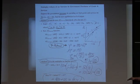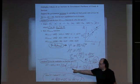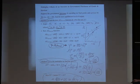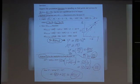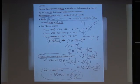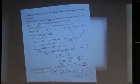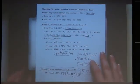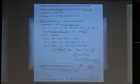Using the shortcut: the change in Y equals the change in autonomous aggregate expenditure times the multiplier. The change was 50, multiplier is 2.5, so Y rose by 125. The new Y is 4,850 plus 125 equals 4,975. That's the direct impact of fiscal policy through G. Now let's talk about the indirect effect through changing taxes or transfers.